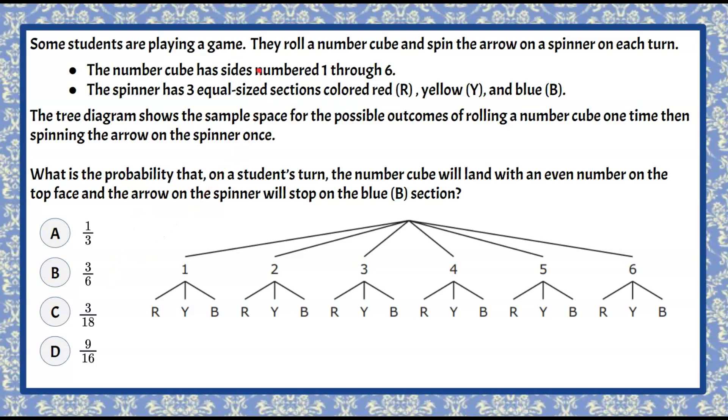Welcome back. So the students that are playing this game, they're going to roll a number cube and they're going to spin an arrow on a spinner. We're told that this number cube is a standard die, has the numbers one through six on it. In our tree diagram, which is what this image is, we have the numbers one through six.